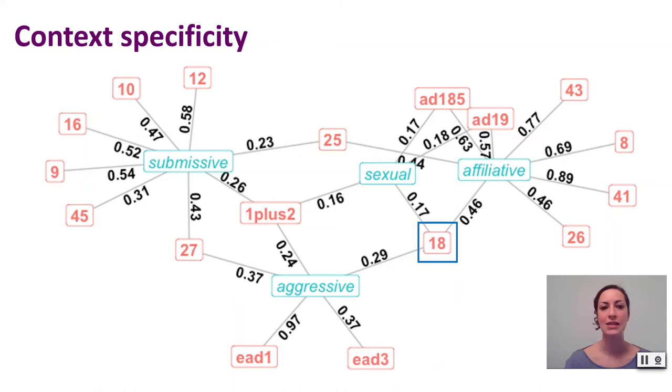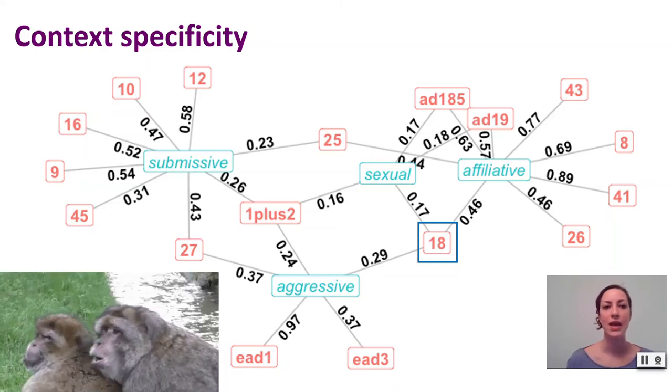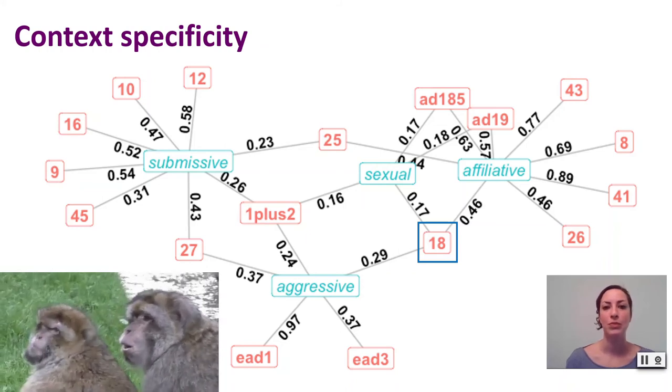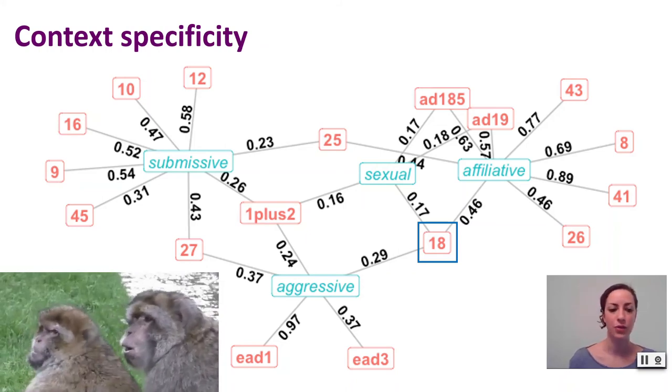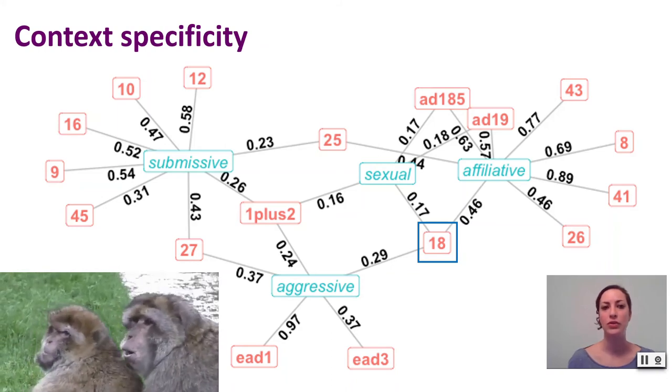that action unit 18, responsible for the protrusion of the lips, is not specific to a context but is shared between two different conditions: aggressive and affiliative. This can be seen on this video below. In aggressive situations, AU18 is responsible for the open-face signaling threat on the right, and in affiliative contexts it contributes to what is called the lip smack.